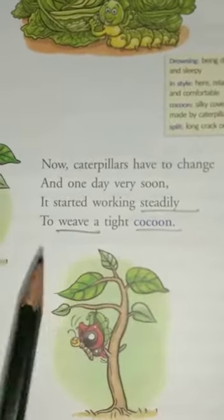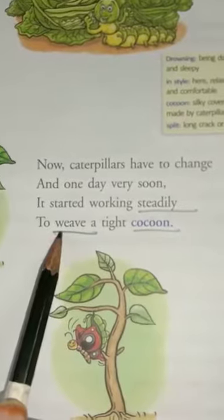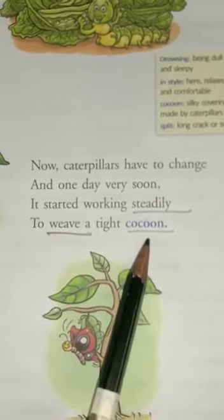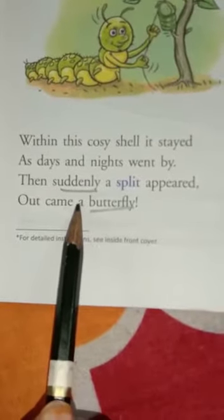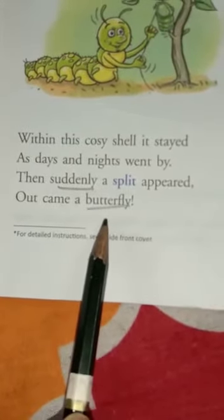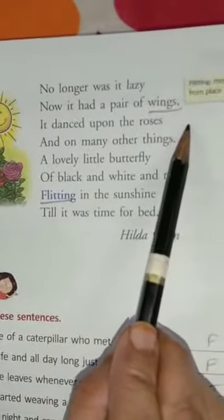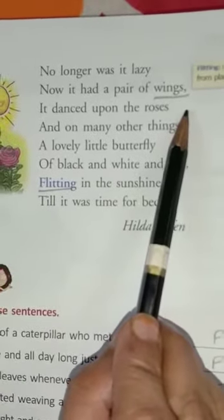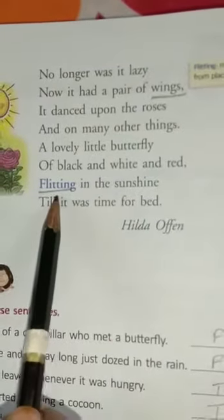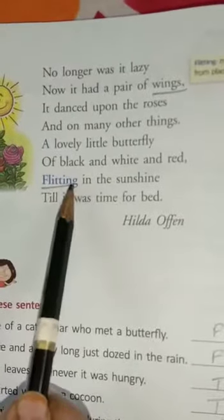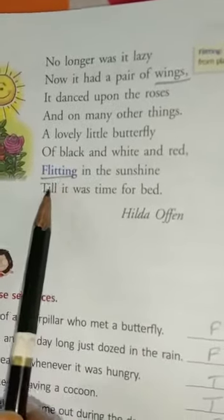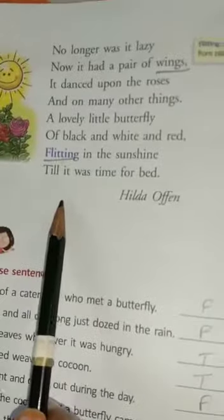Steadily, weave, cocoon. Come to the third paragraph. Suddenly, butterfly. Turn the page and then you have: wings, flitting. So these are the words which you will underline and you will learn the spellings for your spelling class.